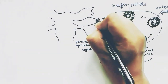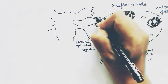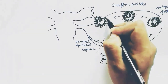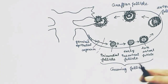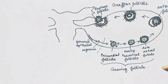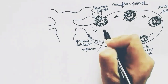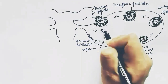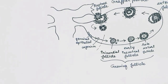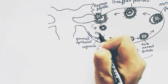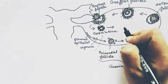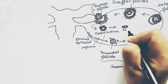After rupturing, this follicle is called the ruptured follicle. The follicular cells, without the oocyte, form the corpus luteum. This corpus luteum eventually degrades and forms the corpus albicans.